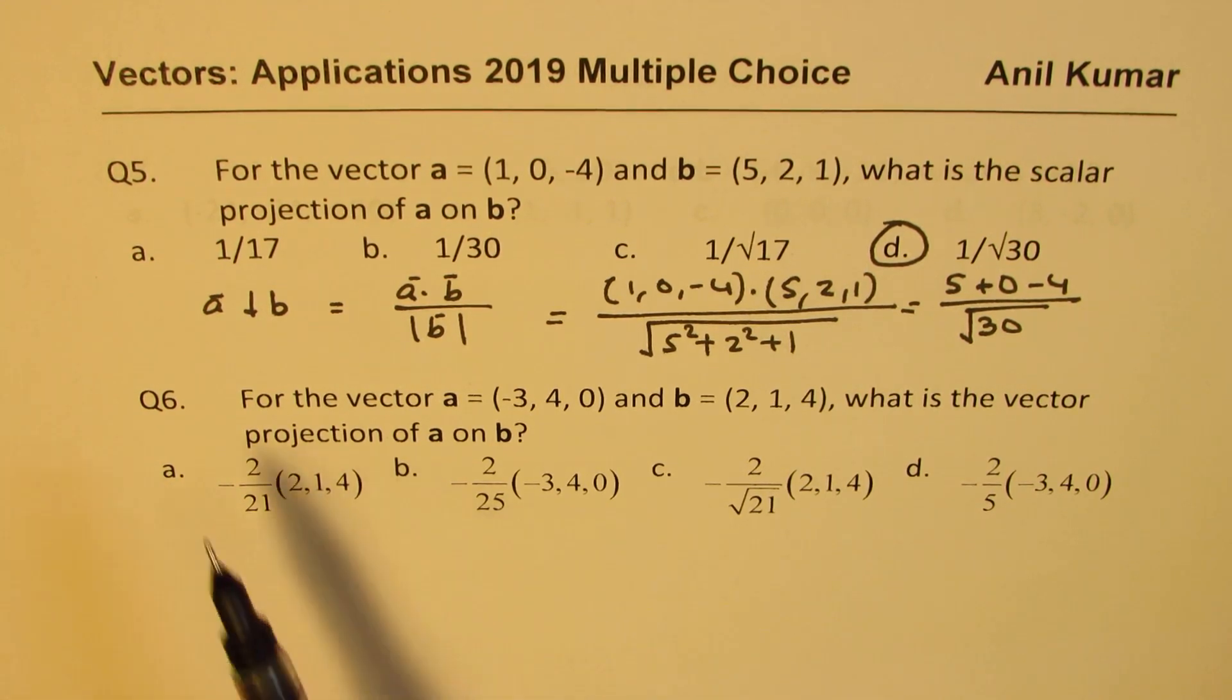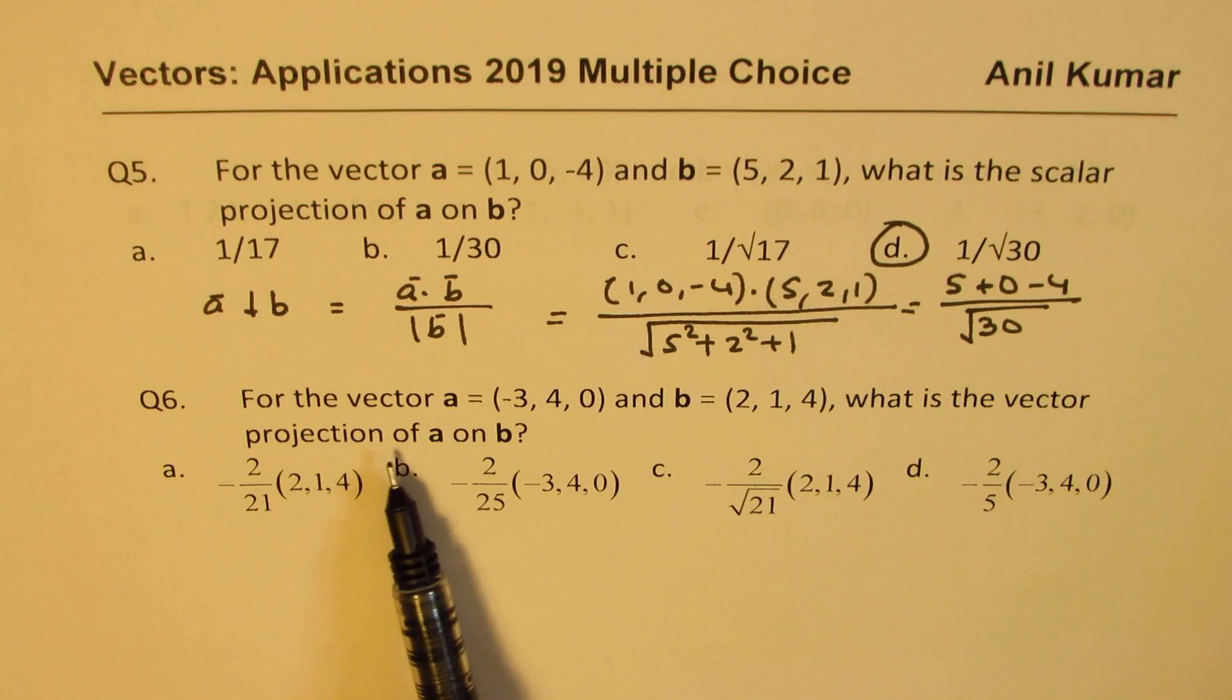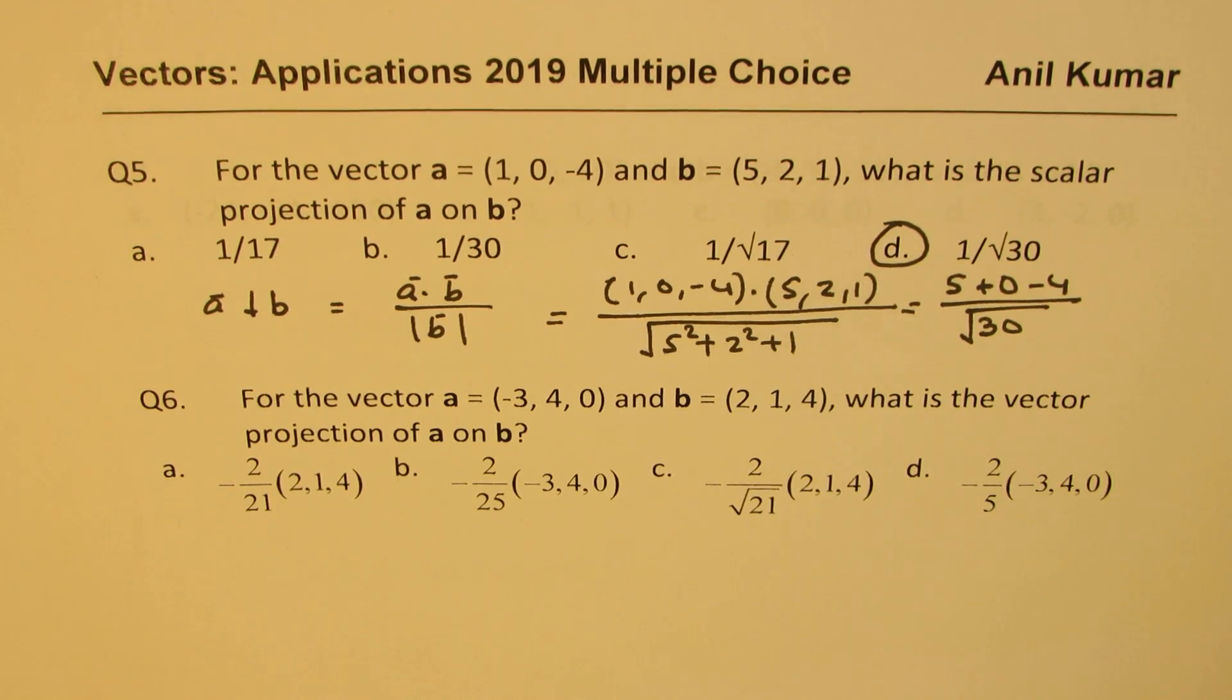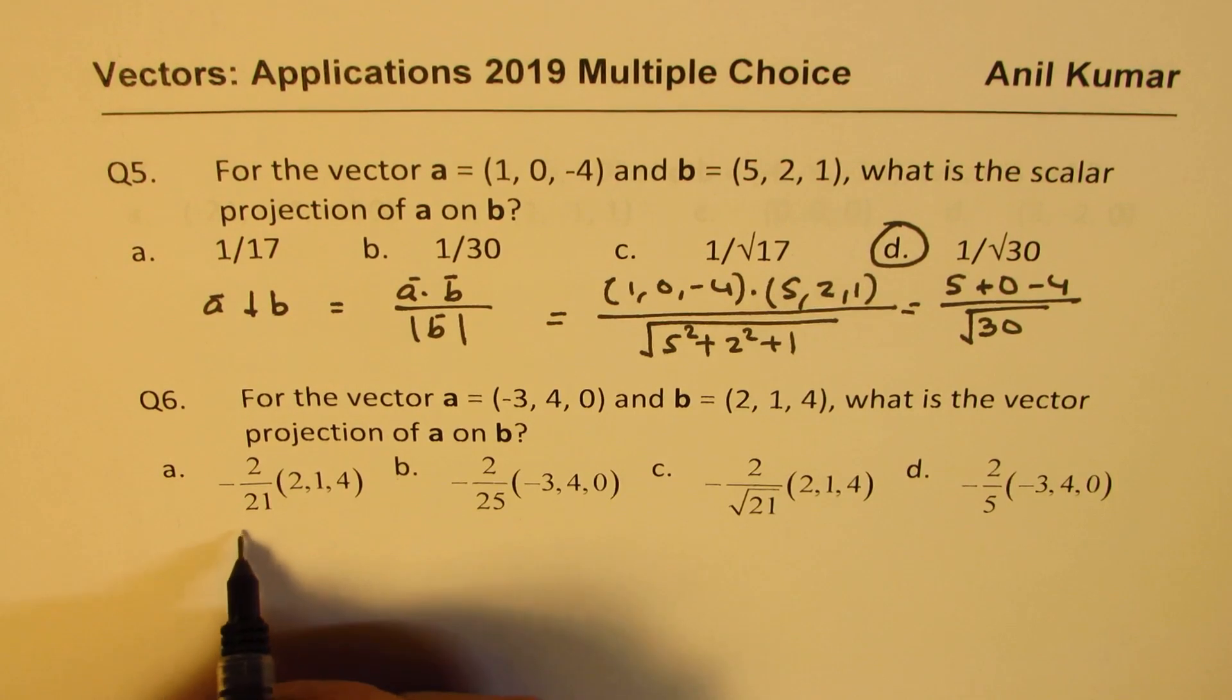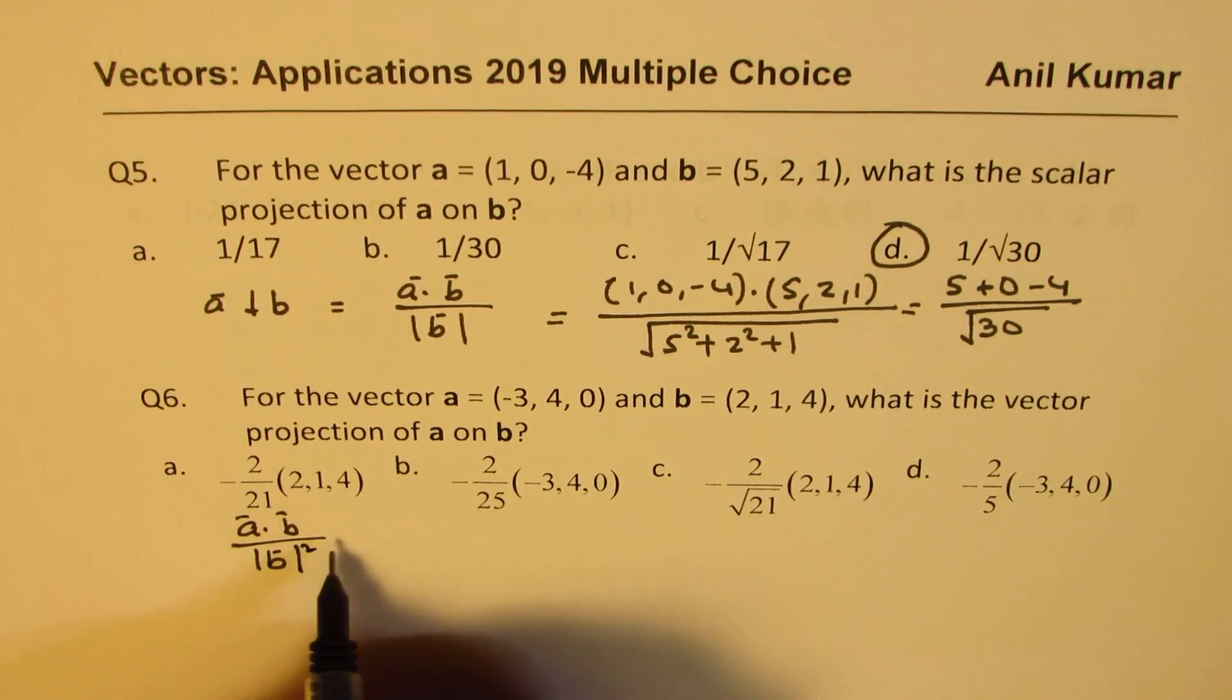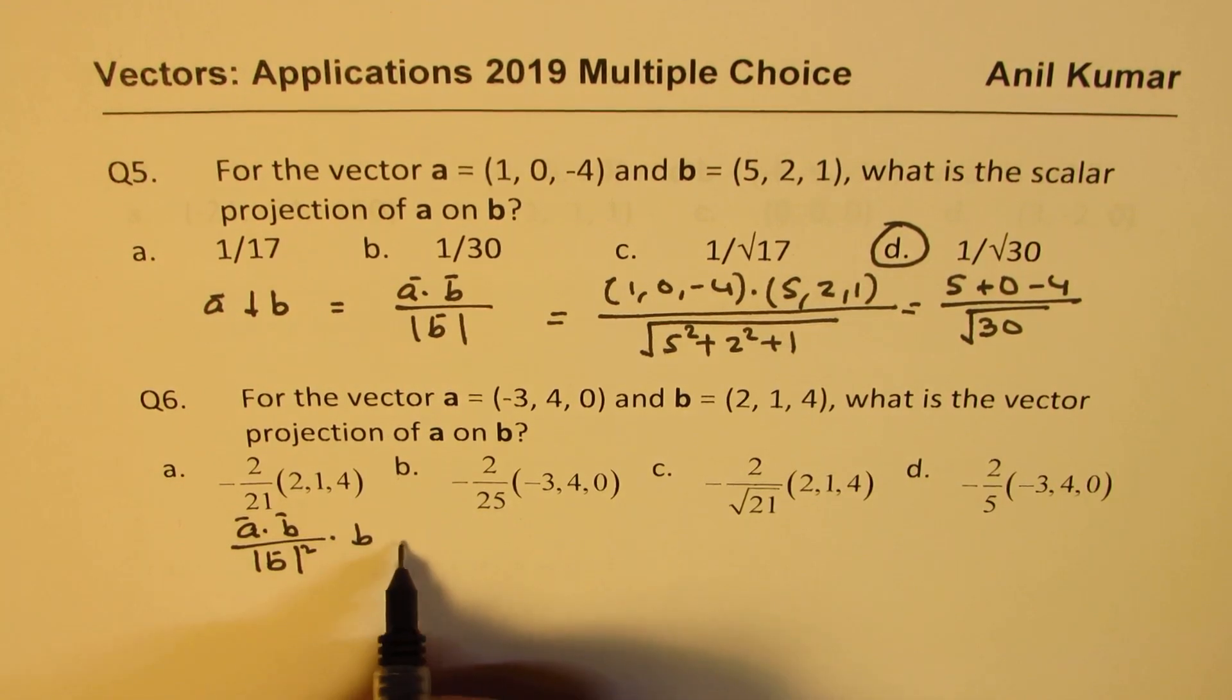Sixth question here is, for the vector A and B, what is the vector projection of A on B? Now, what is the formula for vector projection? So when you have vector projection, then we are also looking into the direction. So it is in the direction of B. So this time, A dot B over magnitude of B squared times the vector B. So basically, a unit vector B we are looking into.